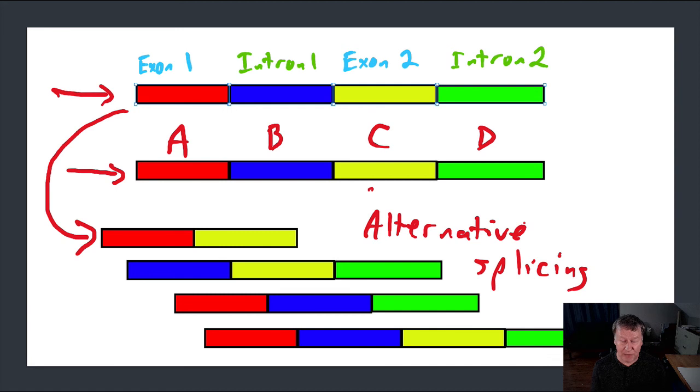Prokaryotic organisms, which do not have introns, are not able to do this. If they have 10 genes, they can produce 10 proteins. If they want to produce 100 proteins, they need to have 100 genes.